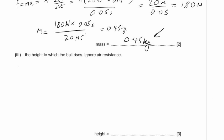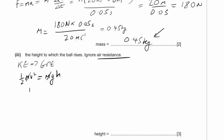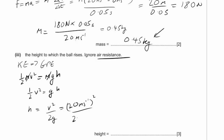For the height the ball rises, ignoring air resistance: kinetic energy converts to gravitational potential energy. So ½mv² = mgh. The masses cancel, giving ½v² = gh, and therefore h = v² / 2g. Substituting: h = 20² / (2 × 10) = 400 / 20.